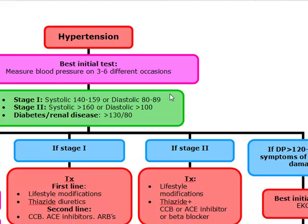Prehypertension is going to be classified as either/or. What I mean by that is either they have a systolic between 120 and 139, or a diastolic between 80 and 89. You only need one in order to have a diagnosis of prehypertension. But right now we're not talking about normal or prehypertension — we're talking about hypertension.